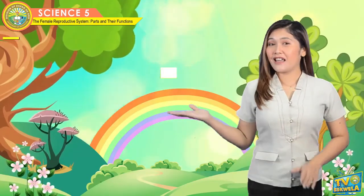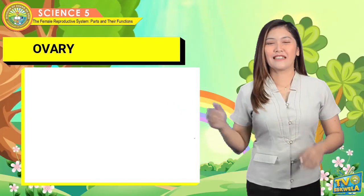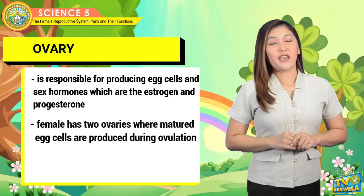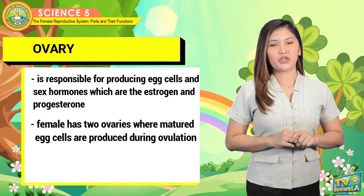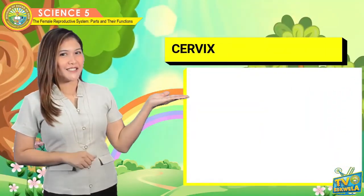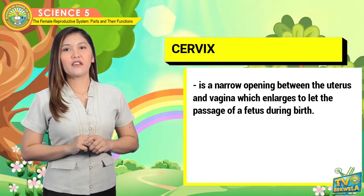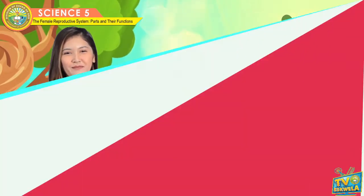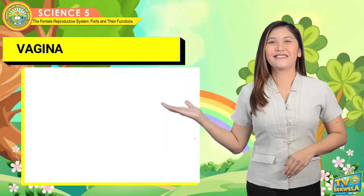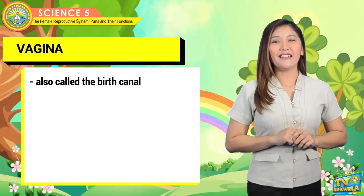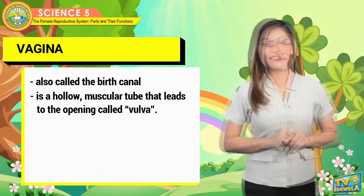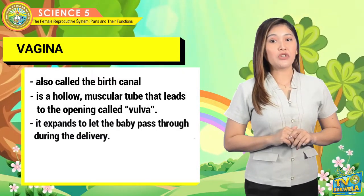Next, the ovary — responsible for producing egg cells and sex hormones, which are estrogen and progesterone. A female has two ovaries where matured egg cells are produced during ovulation. The cervix is a narrow opening between the uterus and vagina, which enlarges to lead the passage of a fetus during birth. The vagina, also called the birth canal, is a hollow muscular tube that leads to the opening called the vulva. It expands to let the baby pass through during delivery.